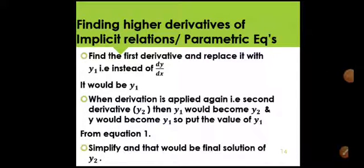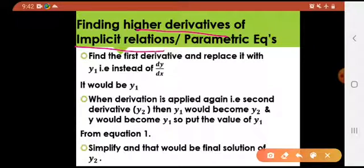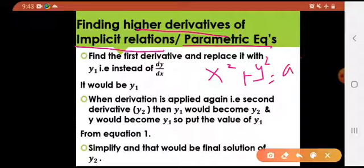Bismillahirrahmanirrahim. Welcome back. In this part we will be learning about finding higher derivatives of implicit relations and parametric equations. Implicit relations are those where y and x cannot be separated easily. For example, x squared plus y squared equals a squared — the variables could not be separated easily.